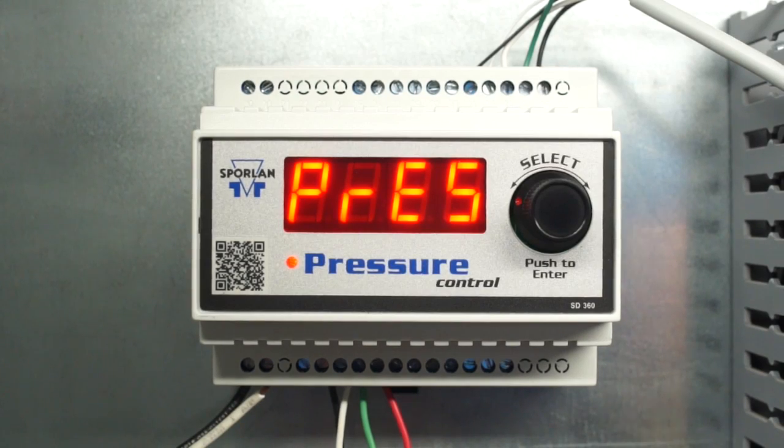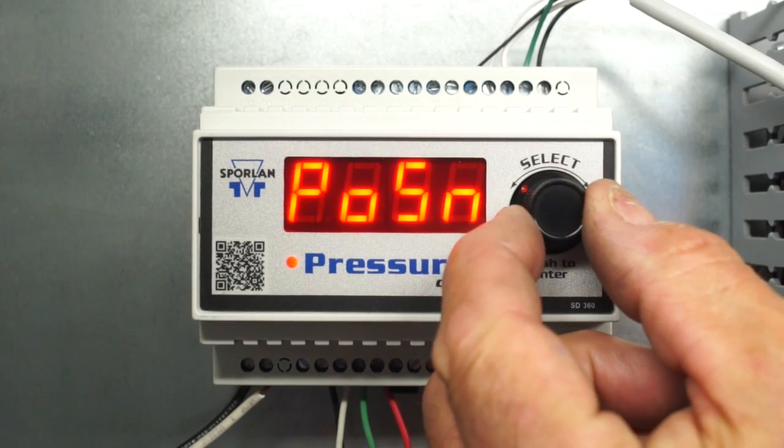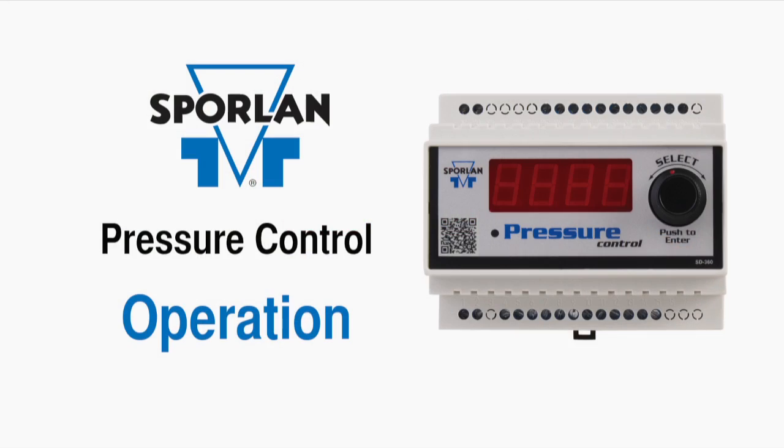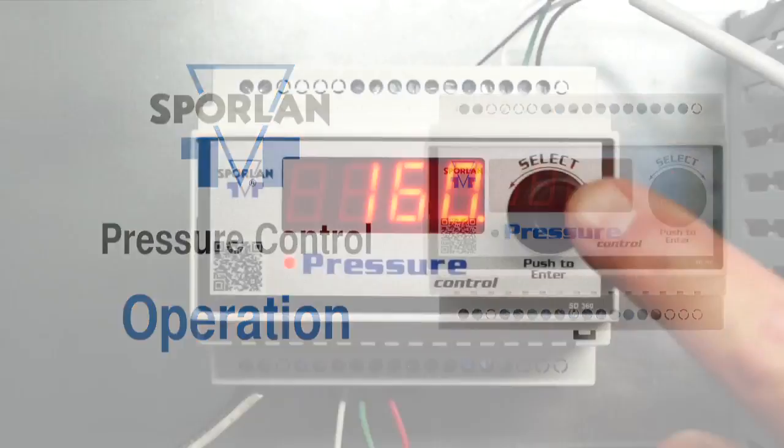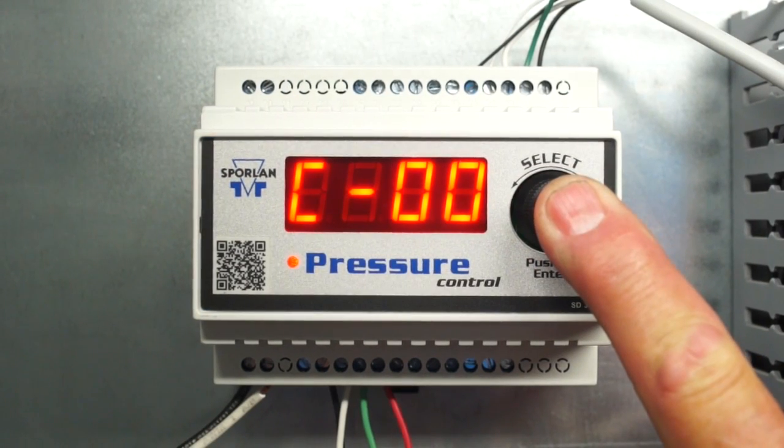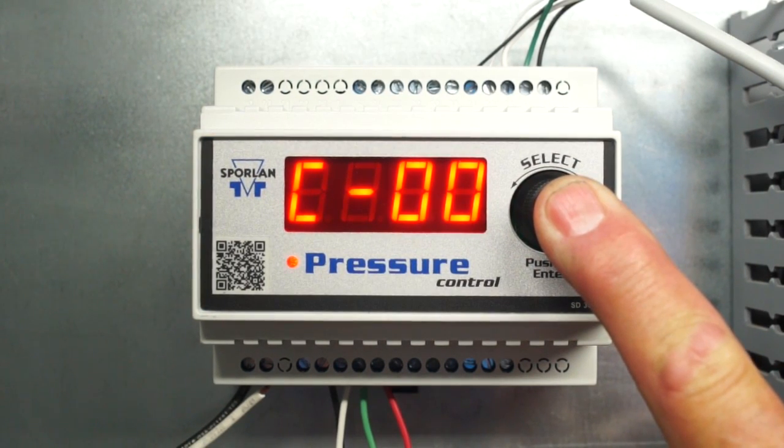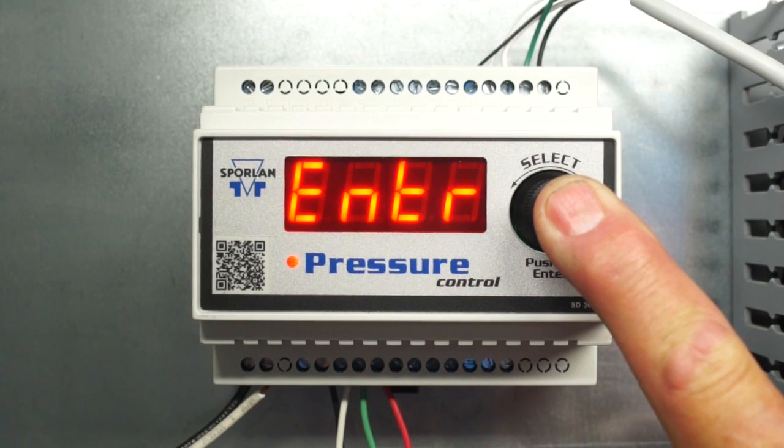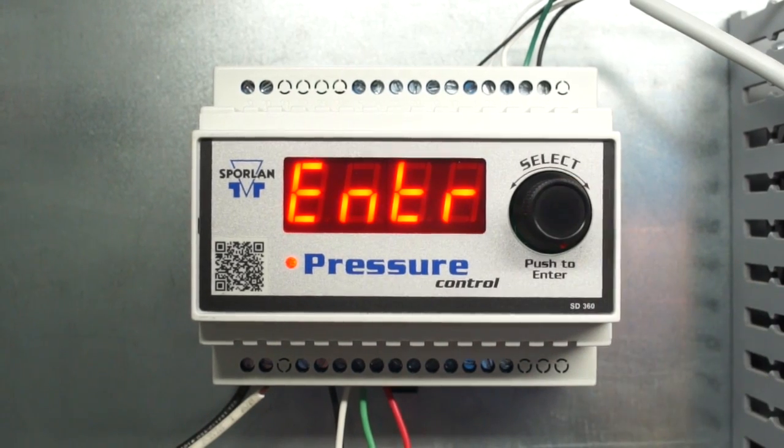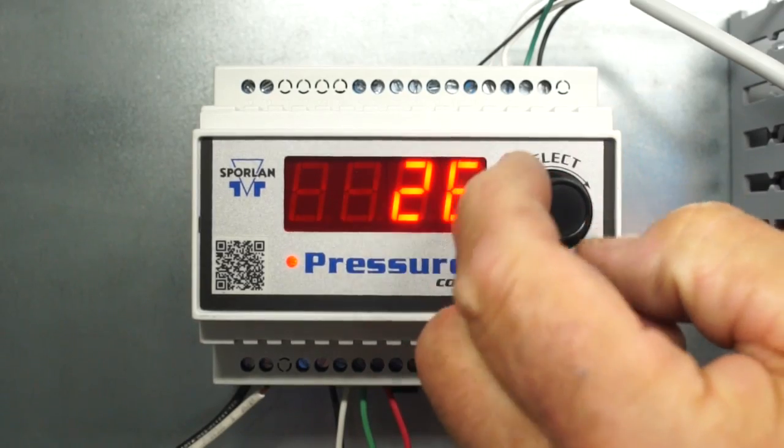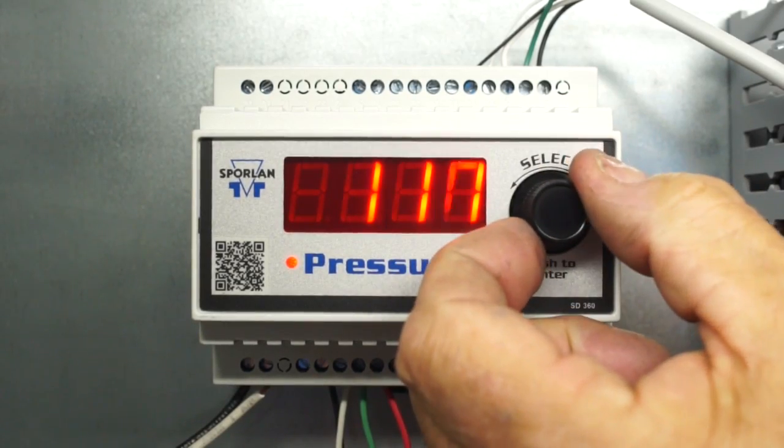The controller is now in the process values menu. Rotate the knob to view the values. To enter the set point menu, press the select knob for 5 seconds. Now, enter the password and press the select knob again. The default password is 111.